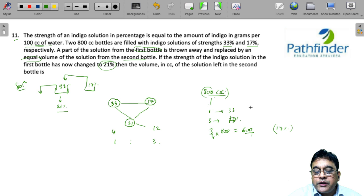That means the second bottle, which holds 17% indigo solution, must be left with only 200 cc solution. It's almost an oral question if you understand allegation rules.